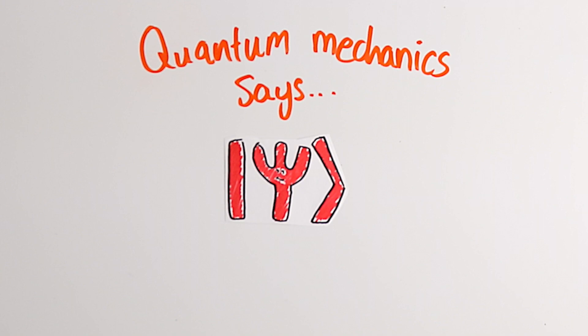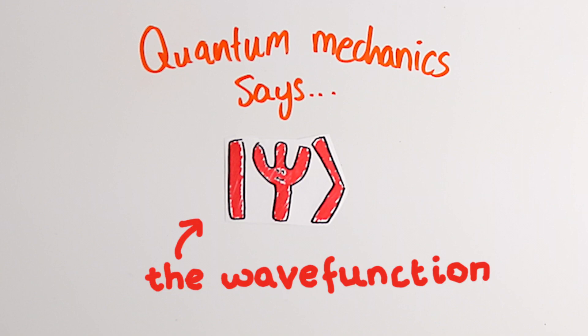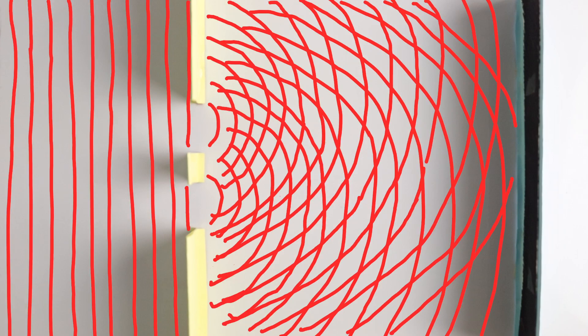Instead, it talks about something called the wave function of the electron. This is a mathematical function that spreads throughout space, and in this experiment happens to look very wave-like.